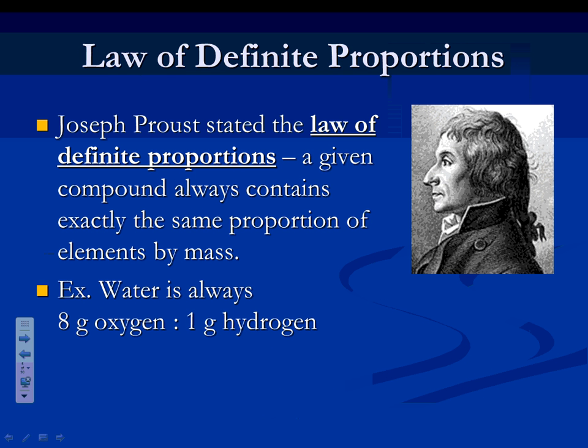This is Joseph Proust. He came up with the law of definite proportions — you need to know this law. It says that when you analyze the elements in a compound, they'll always have the same ratio. For instance, water will always be 8 grams oxygen to 1 gram hydrogen. No matter how much water you have, it'll always be the same ratio. So if you have 18 grams of water, it'll be 16 grams oxygen and 2 grams hydrogen.